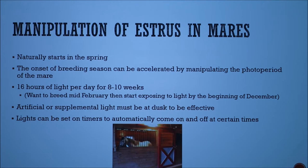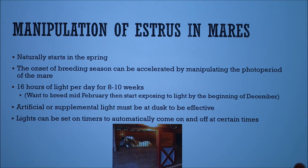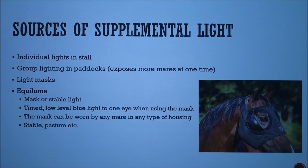The estrus cycle in mares can be manipulated various ways, one of which is with light. Mares naturally start cycling in the spring, but the onset of the breeding season can be accelerated by manipulating the photoperiod. This requires 16 hours of light per day for 8 to 10 weeks prior to when you want to start breeding. So if you want to breed in mid-February, you need to start light exposure by the beginning of December. Artificial or supplemental light must be provided at dusk to be effective, as that is when the extra light extends the cycle. Lights can also be on timers to automatically come on and off at certain times.